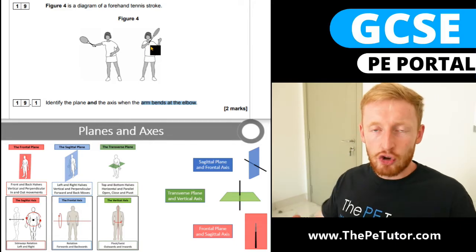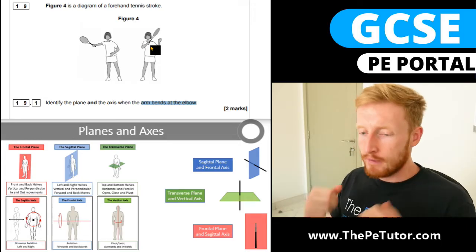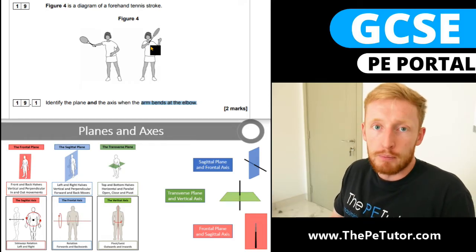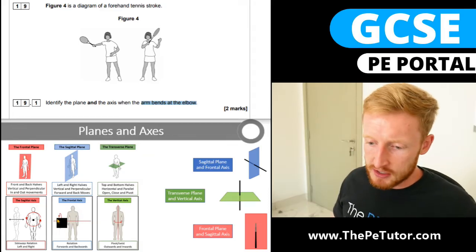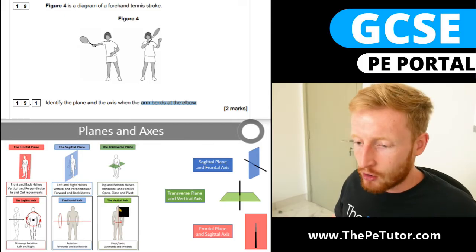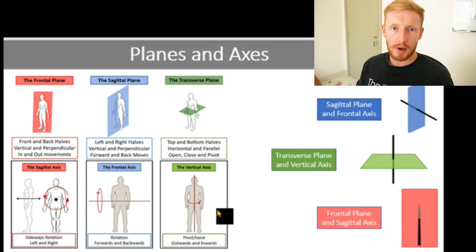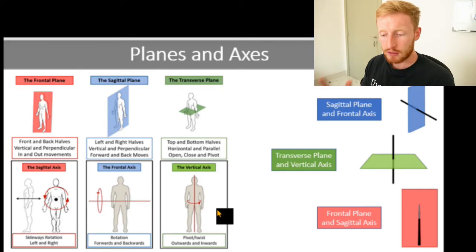If we now take that into anatomical position and replicate flexion at the elbow — very similar to a bicep curl, bringing those palms up from beside our pockets up towards our shoulder, decreasing that angle at the joint — we need to determine which plane and axis flexion at the elbow occurs in. With a plane, we're looking for a parallel movement, that windscreen wiper action where the limb or bone would be wiping that surface of the plane, moving parallel to it.